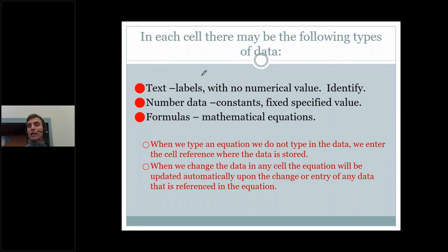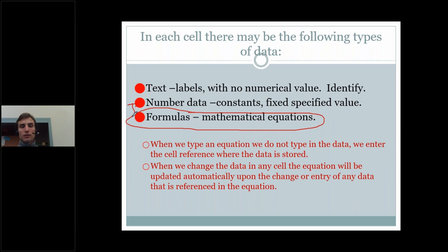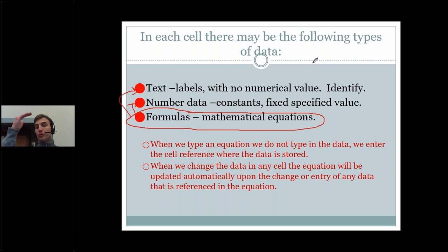We can also enter number data or numerical data — these are typically fixed specified values that we enter ourselves. So if we're keeping track of how many we sold of each product in our store, we might enter 35 of this, 25 of that, etc. Once we enter all the hard data values, we can then incorporate them into formulas, which are mathematical equations that take that data and perform some kind of calculation on them — like adding up all the products we sold today. We can incorporate text data into a formula as well, not just numerical data. For example, if I need to count how many times someone's name appears in a worksheet, there's a formula that will do that.